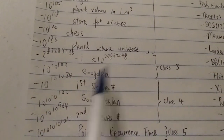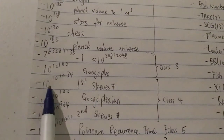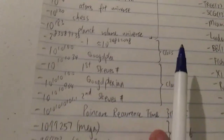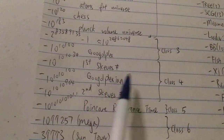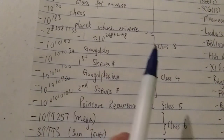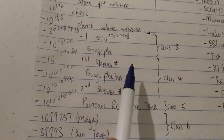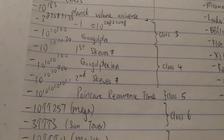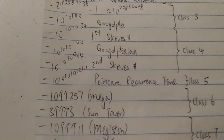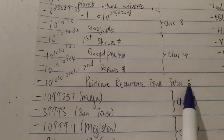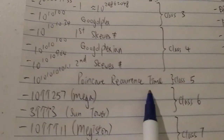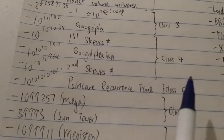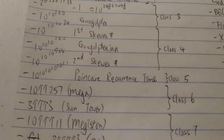Next, also class 3, is a googolplex: 10 to the 10 to the 100, which has a googol digits. Then we have the first Skewes' number, 10 to the 10 to the 10 to the 34, which is class 4. Next is googolplexian, or googolplex-plex: 10 to the 10 to the 10 to the 100. The second Skewes' number is 10 to the 10 to the 10 to the 964. Class 5 is 10 to the 10 to the 10 to the 10 to the 10 to the 1.1 — the Poincaré recurrence time, also the biggest number ever to appear in physics or any science.